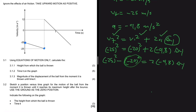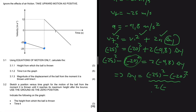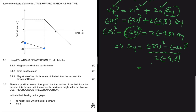Dividing both sides by 2 × (−9.8), we get: Δy = [(−25)² − (−20)²] / [2 × (−9.8)], which gives delta y equals minus 11.48 meters — so the height above the ground is 11.48 meters.